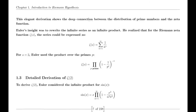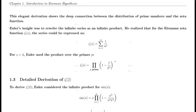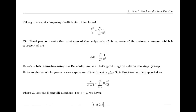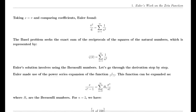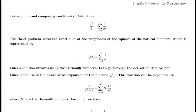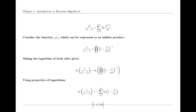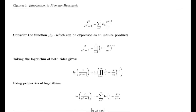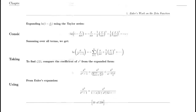Functional equation of the zeta function. The functional equation of the zeta function relates its values at s and 1 minus s through a complex expression involving pi, the gamma function, and trigonometric functions. This equation is a key result in the theory of the zeta function, showcasing its symmetry and the deep relationships between different mathematical concepts.